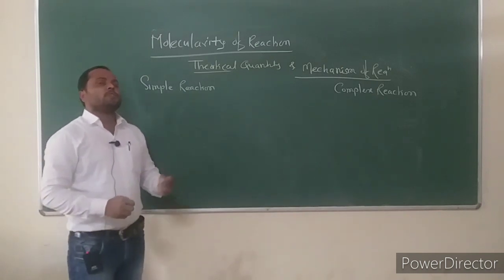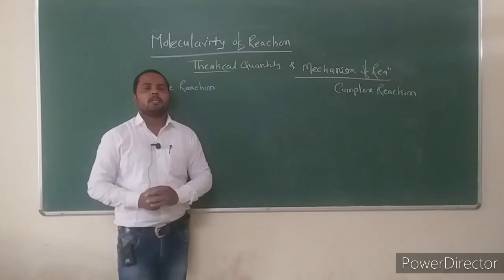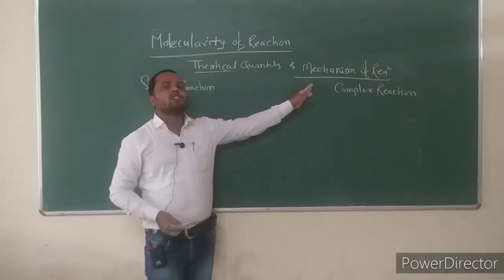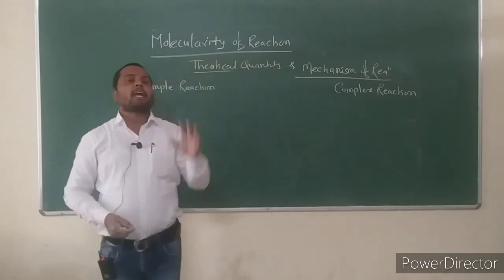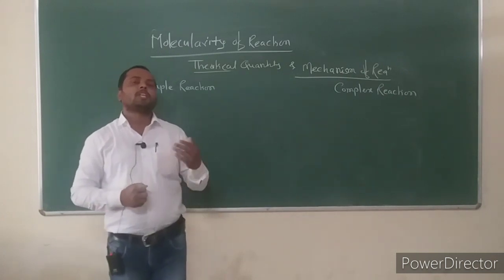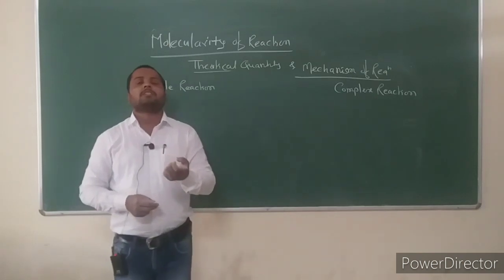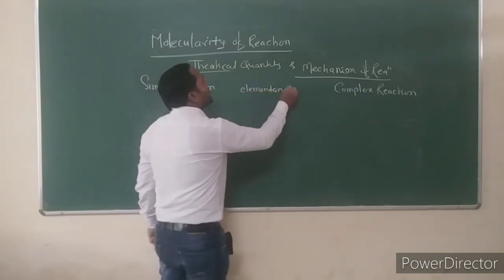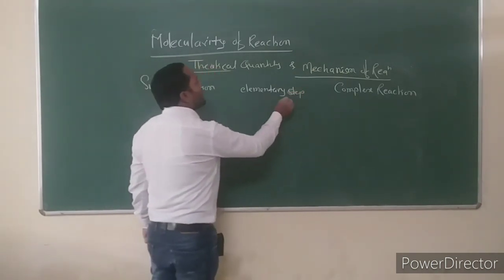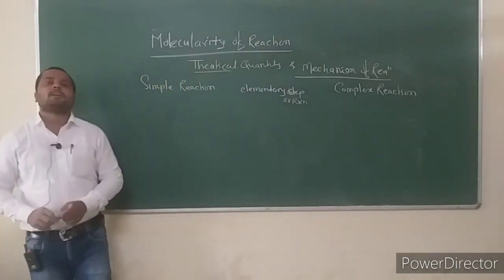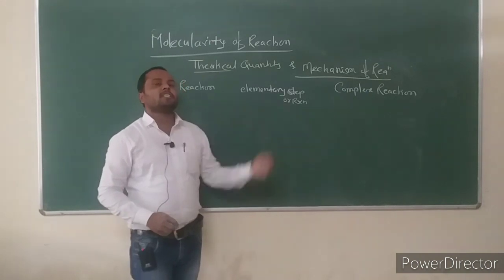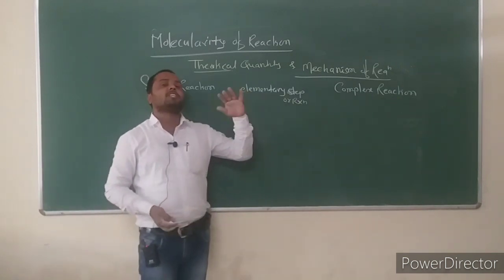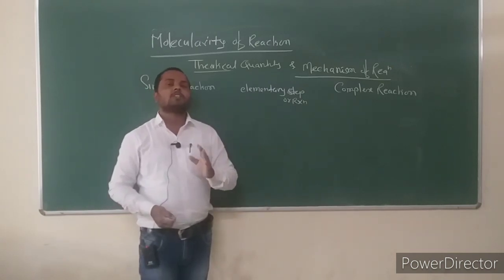Before discussing simple and complex reactions, let us define molecularity. The molecularity of a chemical reaction is a theoretical quantity based on the mechanism of reaction. Each step in the mechanism is considered, since some reactions involve more than two steps. Each such step in the mechanism is known as an elementary reaction. An elementary reaction involves a single step and does not involve any intermediate.